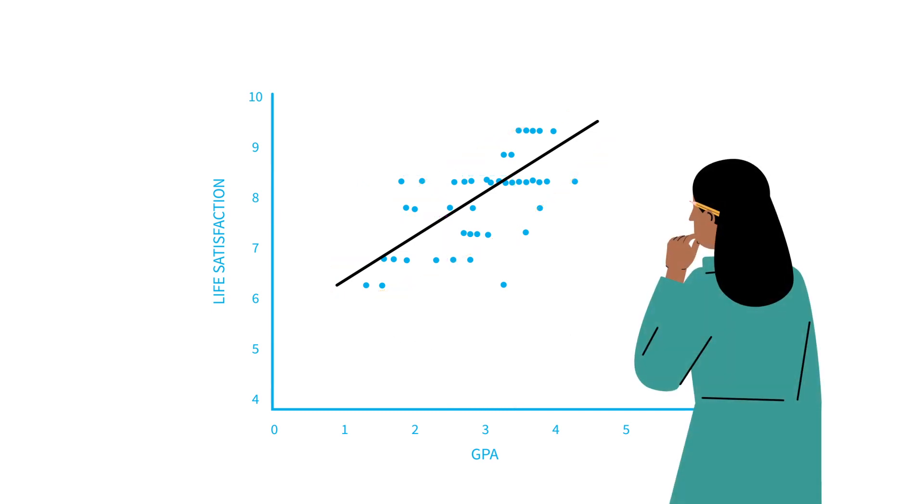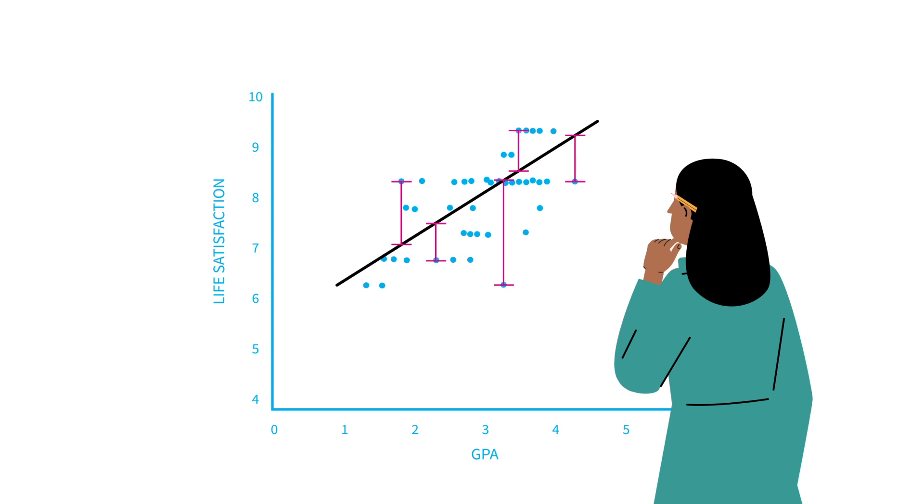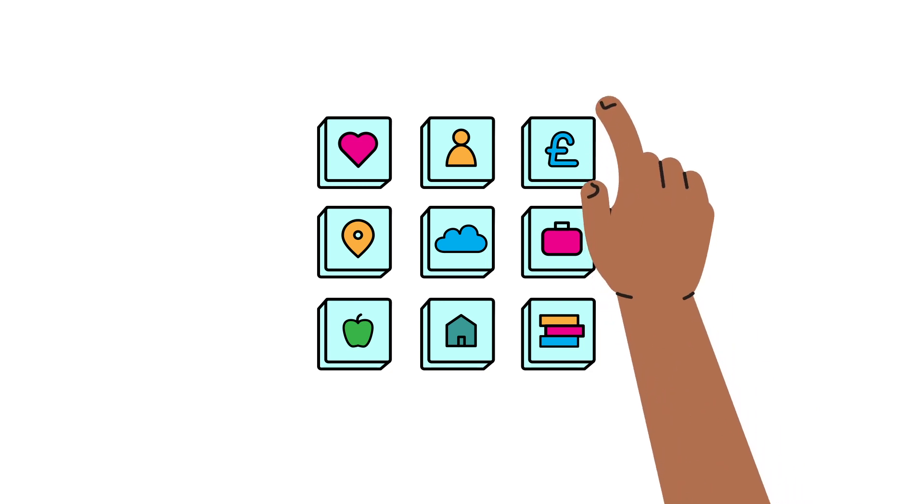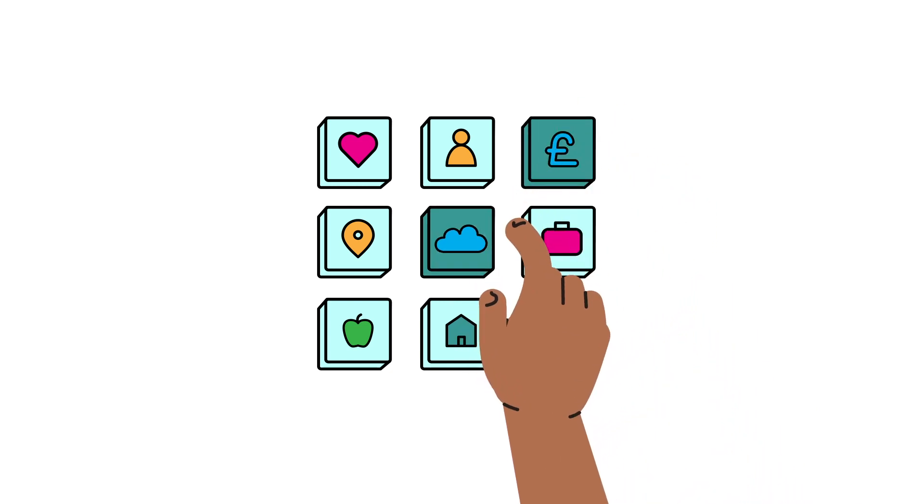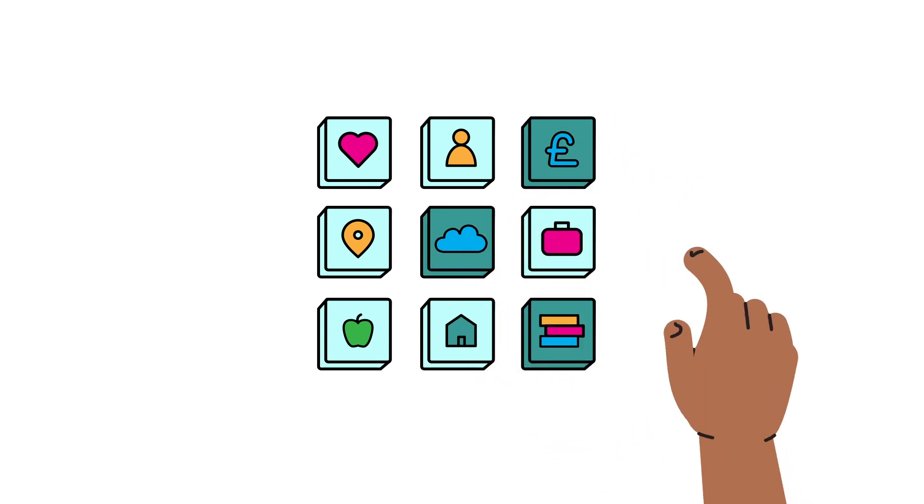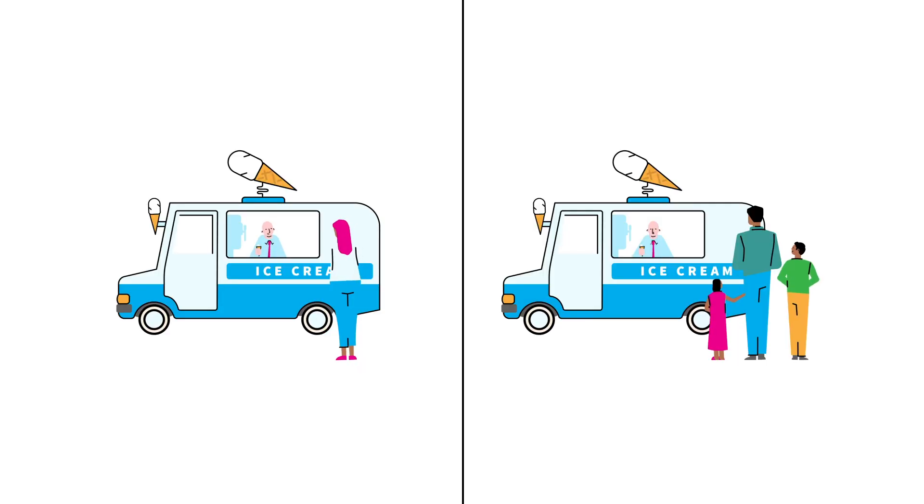It is important to remember that the line is just an estimation and will not predict the outcome perfectly. One of the advantages of regression analysis is that this simple model can be extended to include more and more independent variables. This is important as it allows us to adjust for variables such as confounders.